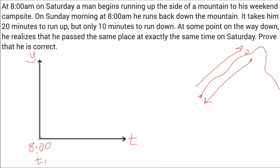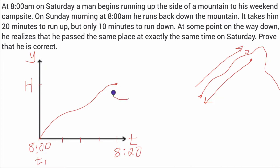We'll go up in five-minute increments: 8:00, 8:05, 8:10, 8:15, 8:20. We're going to introduce two functions. Looking at the mountain climber starting at 8 a.m. climbing up the mountain, we know it takes 20 minutes to get to the top where the campsite is. We'll call the level of the top capital H — the height where the campsite is — and that happens at 8:20. We'll call this function Y equals G of T for going to the top.